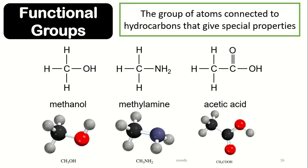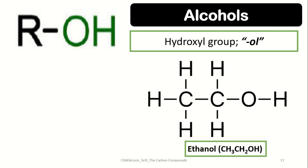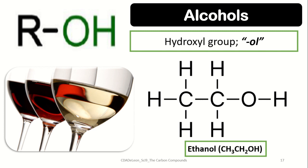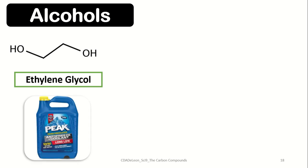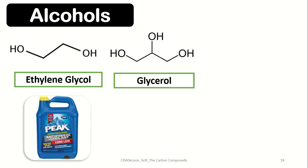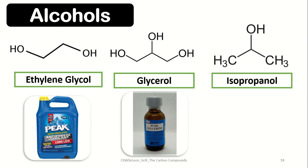Let us start with alcohols. Alcohols are characterized by a hydroxyl group, represented as OH, since it is made up of oxygen and hydrogen atoms. Alcohols are named with the suffix -ol. Ethanol, or ethyl alcohol, is made up of two carbon atoms with an OH group and is an important component of alcoholic beverages such as wine. Ethylene glycol has two alcohol groups and is used as antifreeze coolant in automobile engines. Glycerol, also known as glycerin, has three alcohol groups and is widely used in cosmetic products. Isopropanol, or isopropyl alcohol, is used primarily as a disinfectant.